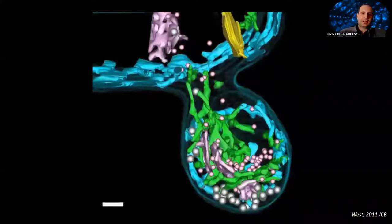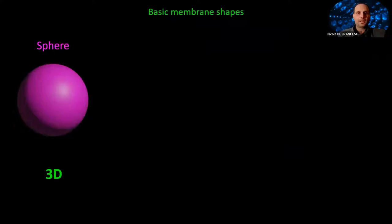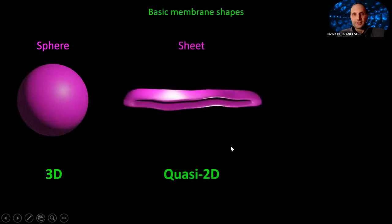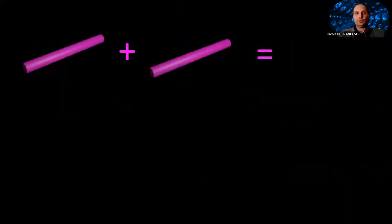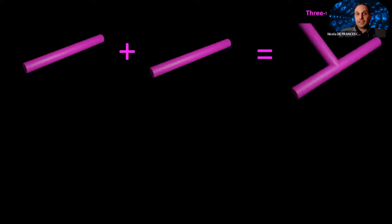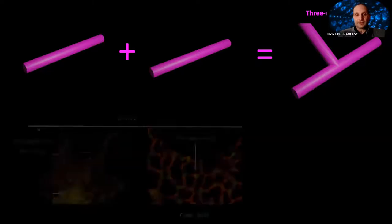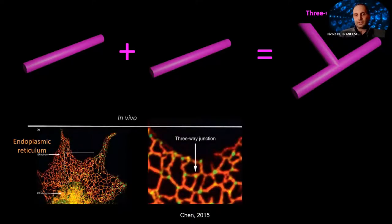How can we rationalize all these complex membrane shapes? I would argue there are only three basic membrane shapes. Membranes can be spherical — this is what we can easily produce in a lab, and we call it a liposome. If we reduce the dimensionality to a quasi-2D system, we obtain a membrane sheet. And reducing dimensionality again to a quasi-1D system, we obtain what is known as a membrane nanotube. Examples of all three shapes exist in vivo. For instance, we can combine nanotubes to obtain what is called a three-way junction, which is the main structural motif of the endoplasmic reticulum.